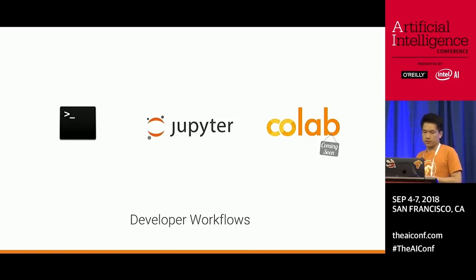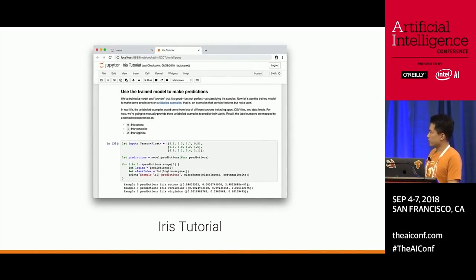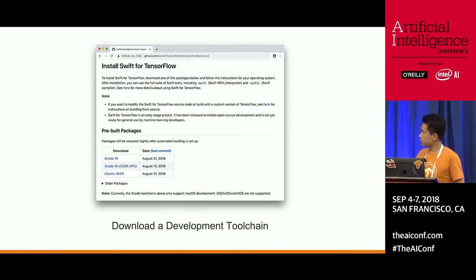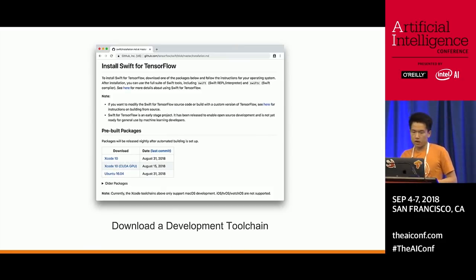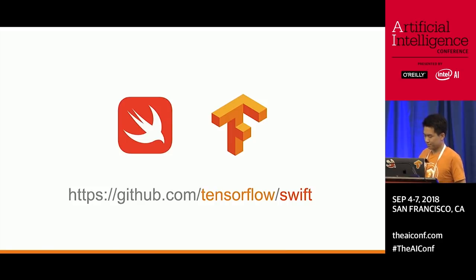Swift supports interpreted mode, scripting mode, and Jupyter notebooks. You can write interactive code as if you're writing Python. We are releasing an Iris tutorial on our website that you can follow and try out. If you want to participate in the development, you can download the development toolchain from our website. Everything is open source — on GitHub at tensorflow/swift, you can find our technical documentation, white papers, and everything. We have an open design process as well. Thank you, everyone.